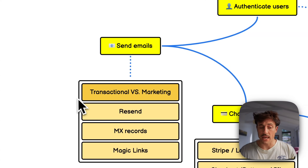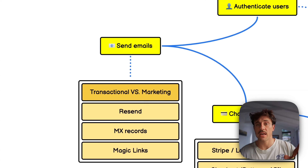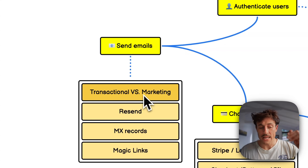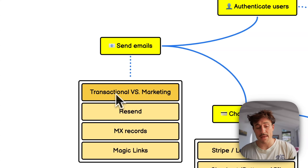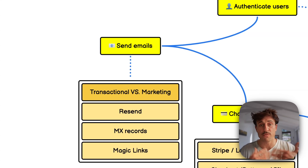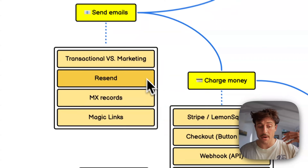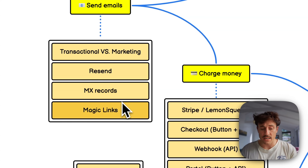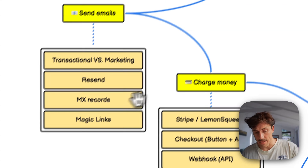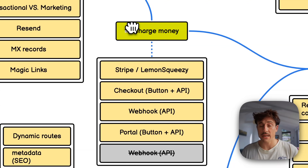You may need to send emails. There are two types: transactional emails — sent by developers for things like magic login links — and marketing emails, which often end up in spam. I use Resend for both. You'll also learn about MX records, which are DNS records specifically for sending emails, and how to send magic links.